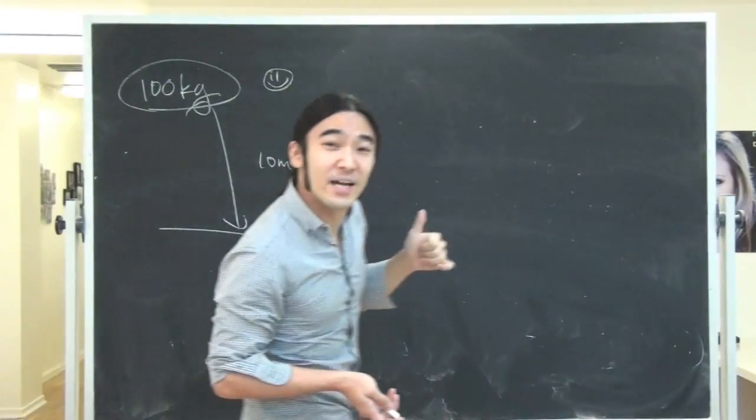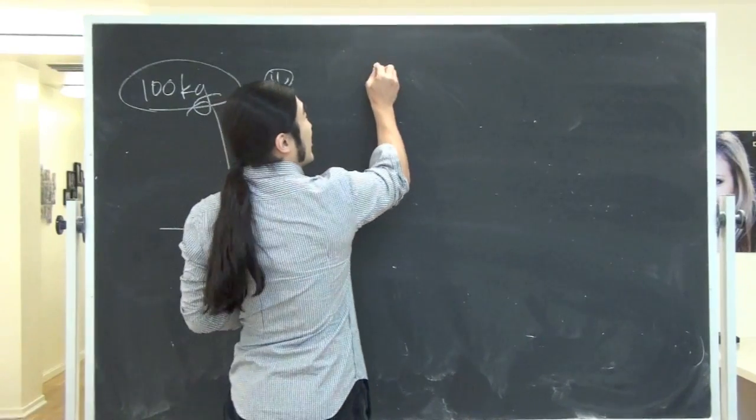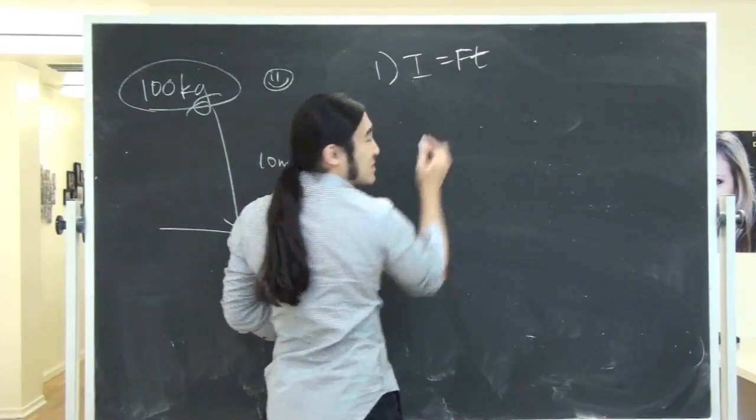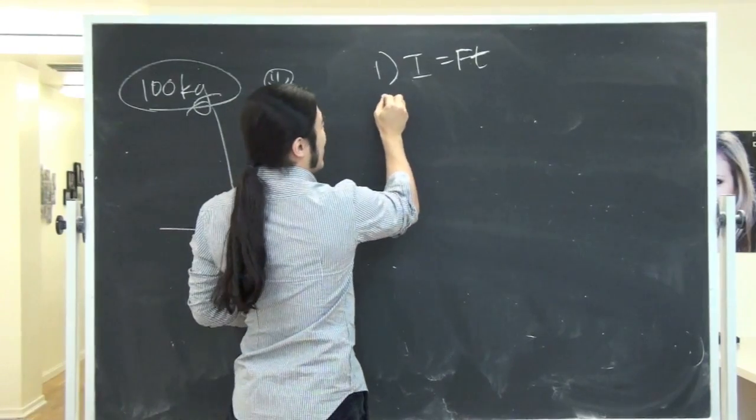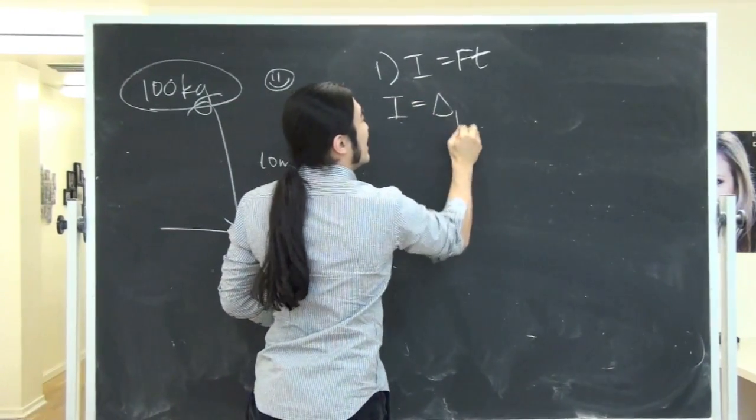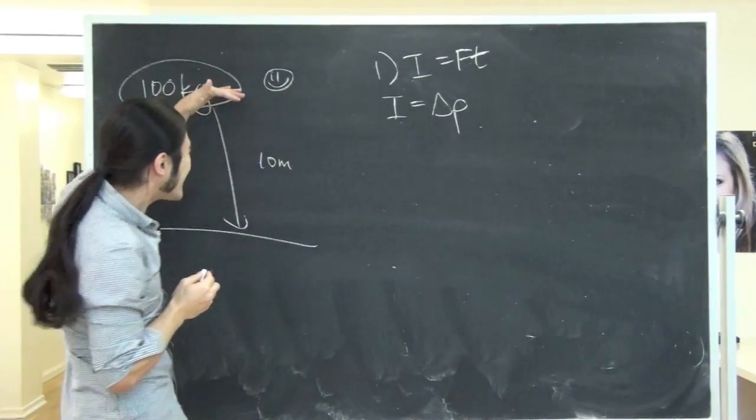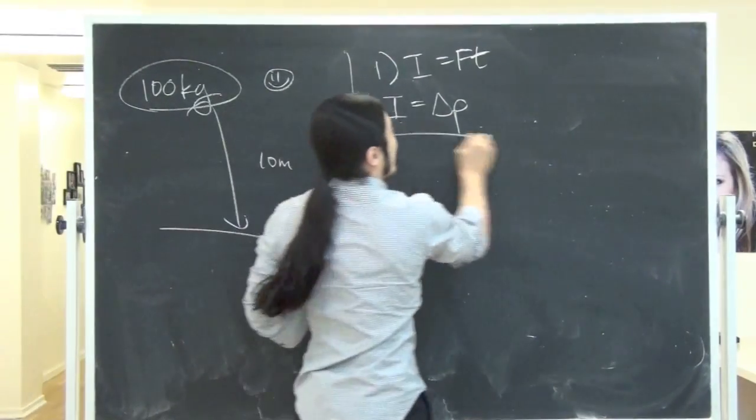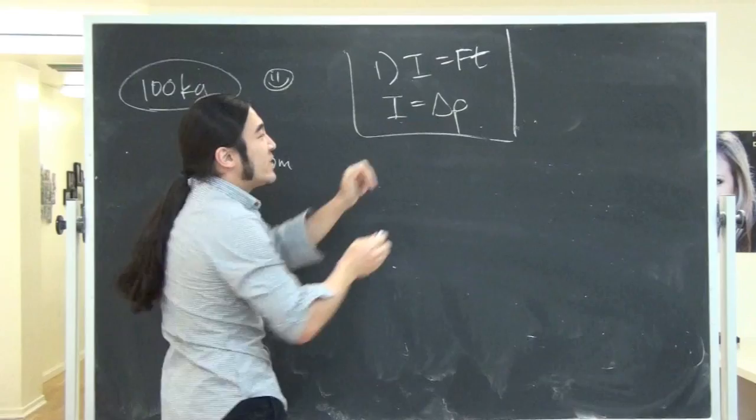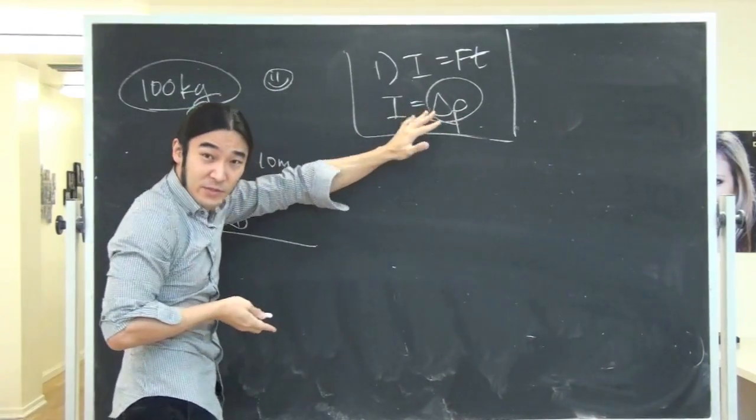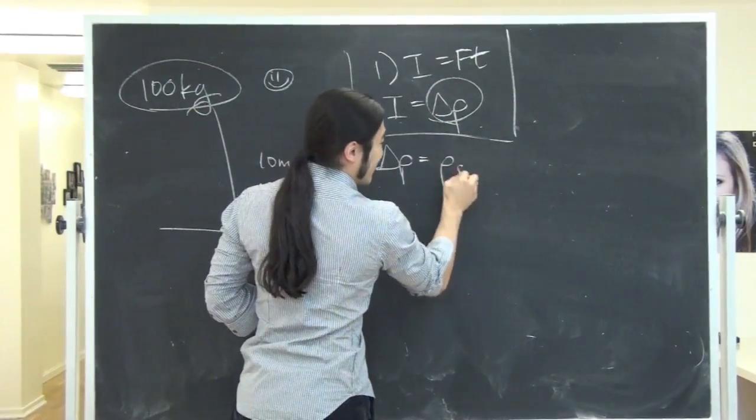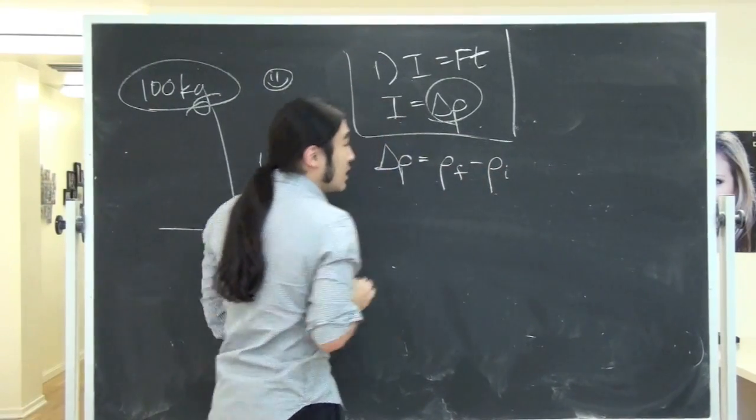The first thing I want to do is compute the impulse. You remember from the review there are two ways to do it. Number one, impulse is force times time. The second way, impulse, just by definition, is change in momentum. Since in this case I don't really have the force when he's hitting the ground, I want to go ahead and use my second definition, change in momentum.